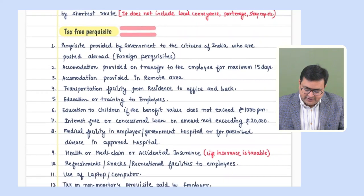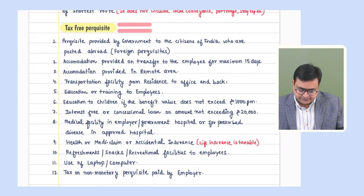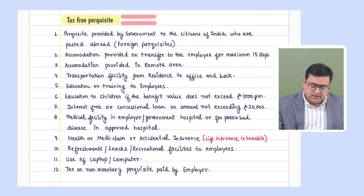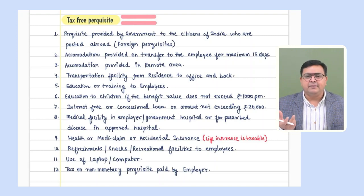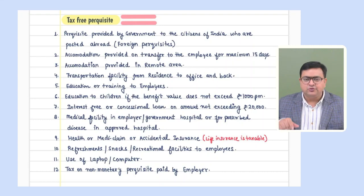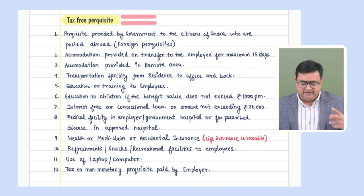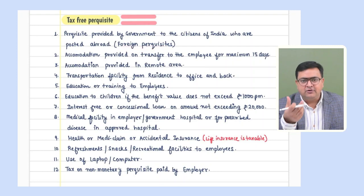Now let's revise the tax-free perquisites on which no tax is applicable — the perquisite value would be nil. First: foreign allowances and foreign perquisites provided by the Government of India to Indian citizens working abroad — for example, an Indian citizen posted at an Indian embassy in the US. Basic salary is taxable, but allowances and perquisites given for serving abroad are exempt under both tax regimes.